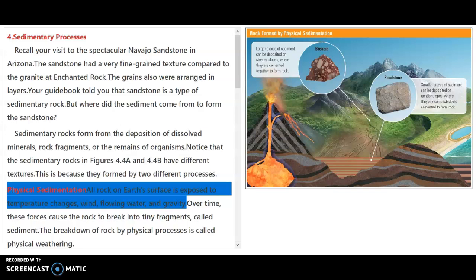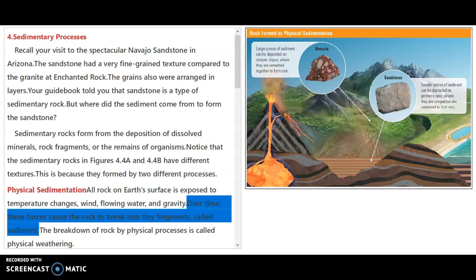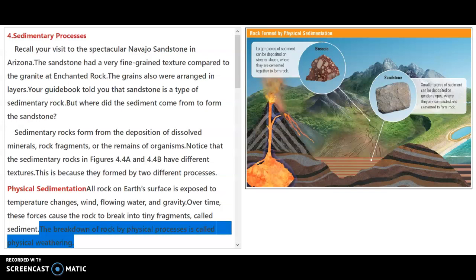All rocks on Earth's surface is exposed to temperature changes, wind, flowing water, and gravity. Over time, these forces cause the rock to break down into tiny fragments called sediment. The breakdown of rock by physical processes is called physical weathering.